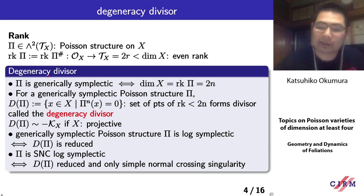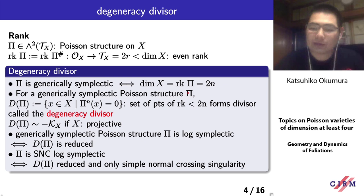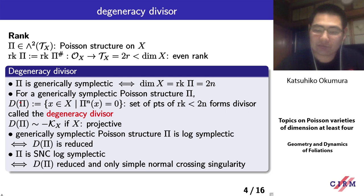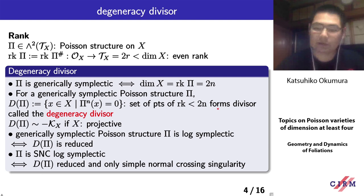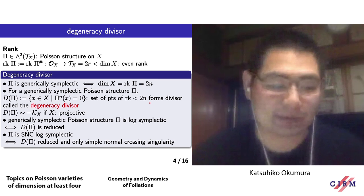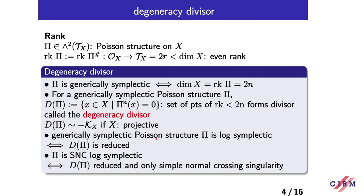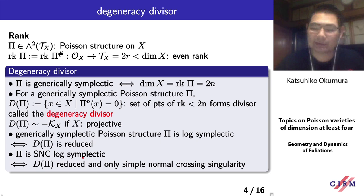Now we define the degeneracy divisor. We say pi is generically symplectic if the rank is maximal, so rank pi equals dimension X. For a generically symplectic Poisson structure pi, the degeneracy divisor D_pi is the set of points of non-maximal rank, which forms a divisor. If X is projective, then the degeneracy divisor is an anti-canonical divisor. A Poisson structure pi is called log-symplectic if D_pi is reduced, and for SNC log-symplectic it has simple normal crossing singularity.